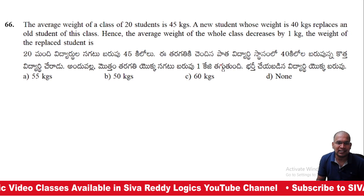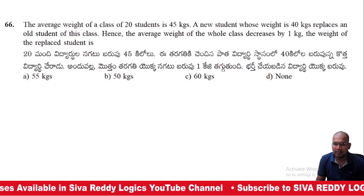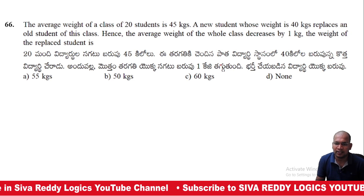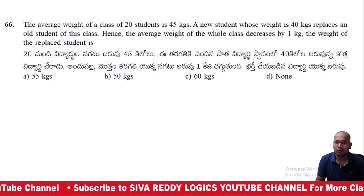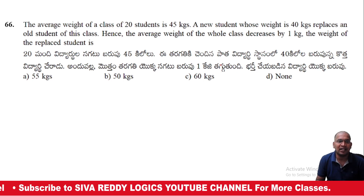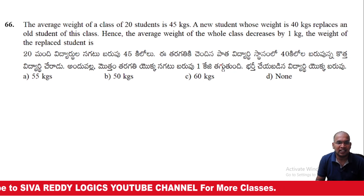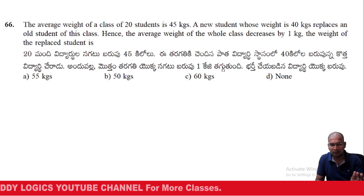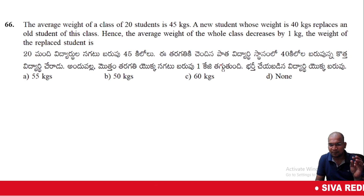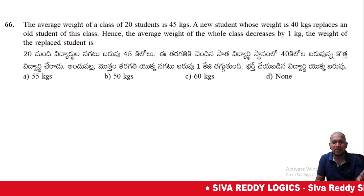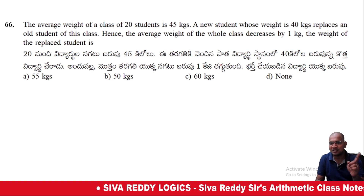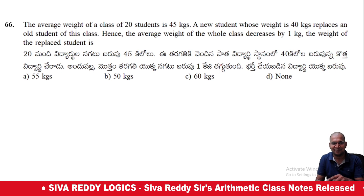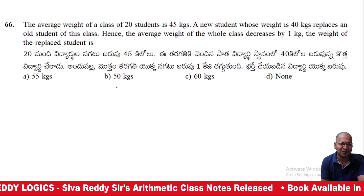Second question: the average weight of a class of 20 students is 45 kg. A new student whose weight is 40 kg replaces an old student of this class, and hence the average weight of the whole class decreases by 1 kg. Find the weight of the replaced student. This is the reverse question.